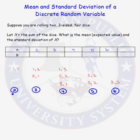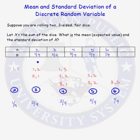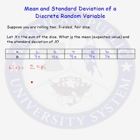The probability that our sum equals 2 is 1 out of 9. The probability that our sum equals 3 is 2 out of 9. The probability that the sum equals 4 is 3 out of 9. The probability that the sum equals 5 is 2 out of 9. And the probability that the sum equals 6 is 1 ninth. Let's put that into our probability distribution function. The sum of all the probabilities is 1/9 + 2/9 + 3/9 + 2/9 + 1/9 = 9/9 = 1. Yes, it does.